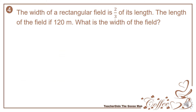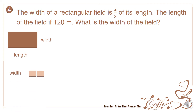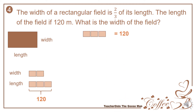Let's have the fourth example. The width of a rectangle field is two-thirds of its length. The length of the field is 120 meters. What is the width of the field? We will represent first the length and the width. The length is 120 meters, which is equivalent to three parts. So we have three parts which is equal to 120.